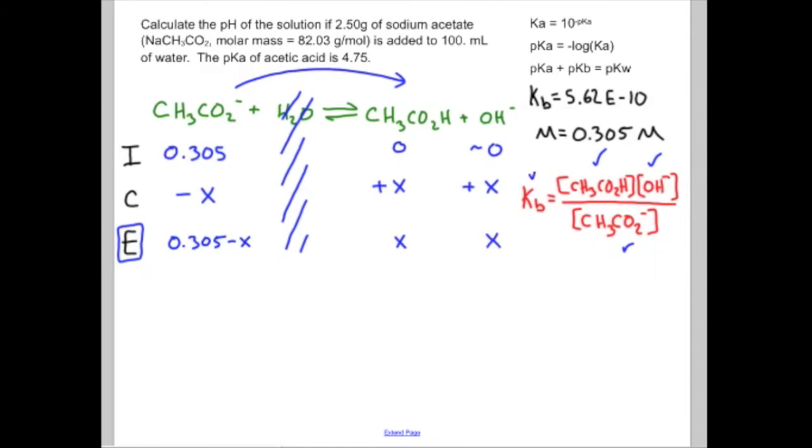I have my Kb value. Now I plug in these equilibrium concentrations, which are still functions of x. It's going to be 5.62e-10, that was the Kb, is equal to x times x is x squared. And I'm going to go ahead and write it like that. Divided by 0.305 minus x.